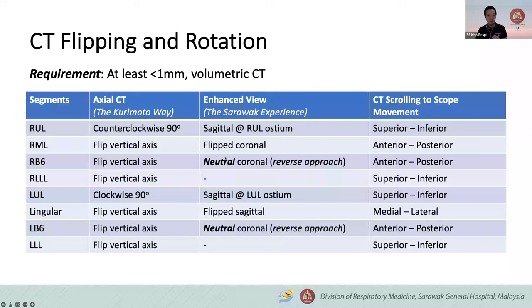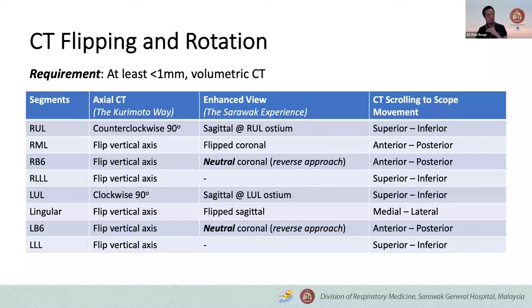From our experience, we follow this initially, but over time we found that certain reconstructions are better for certain lobes. For right upper lobe, if you want to look at the RUL ostium and how RB1, 2, 3 branches out, you use sagittal and scroll. For right middle lobe, we use coronal and flip it. For RB6, we maintain it in neutral using coronal recon. For left upper lobe, if you want to look at the ostium, I use sagittal. For lingular, I use the flipped sagittal. For RB6, I use neutral coronal in the reverse approach.